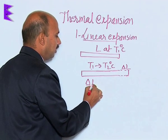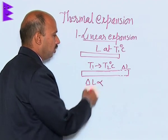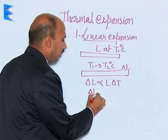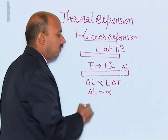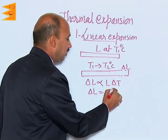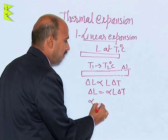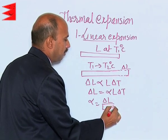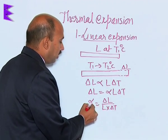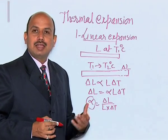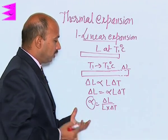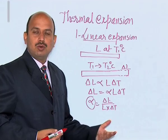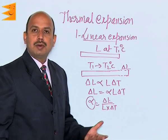This delta L is directly proportional to the original length and the change in temperature, and can be written as delta L equals alpha times L times delta T. Alpha is a constant, and can be written as delta L divided by L multiplied by the change in temperature. This alpha is known as the coefficient of linear expansion, whose unit is per degree Celsius or per Kelvin, because the L units cancel out.